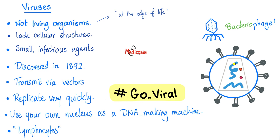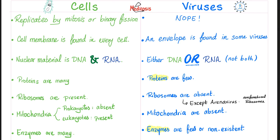Viruses will hijack your own nucleus and use it as a DNA-making or RNA-making machine. Lymphocytes are your own cells responsible for fighting viruses. Cells replicate by mitosis or binary fission — viruses do not. A cell membrane is found in every cell; an envelope is found in some viruses but not all, and the envelope is not a cell membrane. Cells contain both DNA and RNA, but viruses have either DNA or RNA — not both. Cells have many proteins; viruses have few. Cells have ribosomes; viruses generally do not. Mitochondria are always absent in viruses.